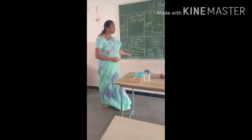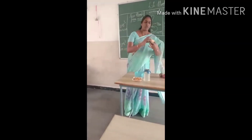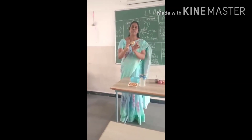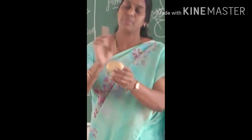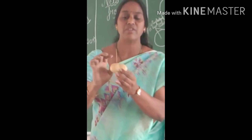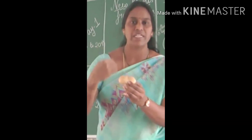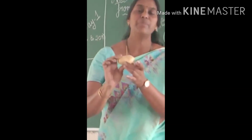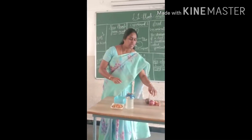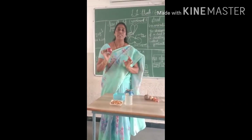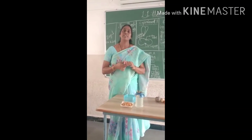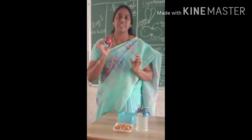Coming to the next one: potato. When you see the potato, how can a new plant grow from the potato? You can see buds here — some buds in between. Buds, or eyes, both are the same. From these buds only, the new plants will grow. The potato is an underground stem. Coming to the next one: onion and ginger. Onion and ginger are also examples of underground stems.